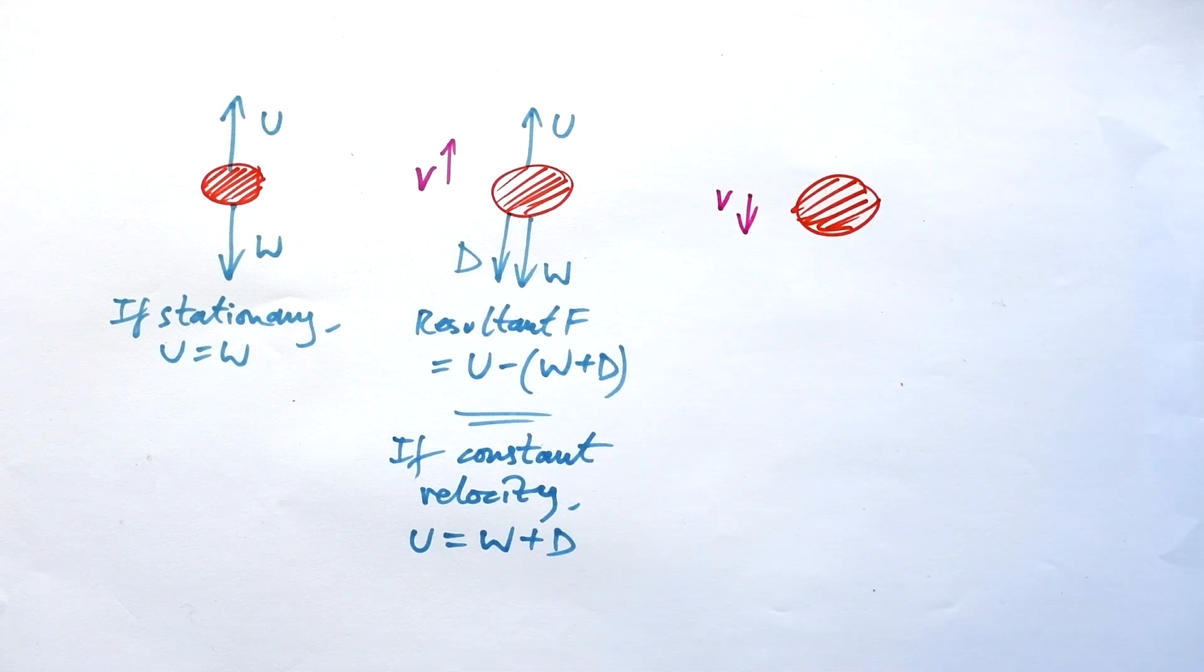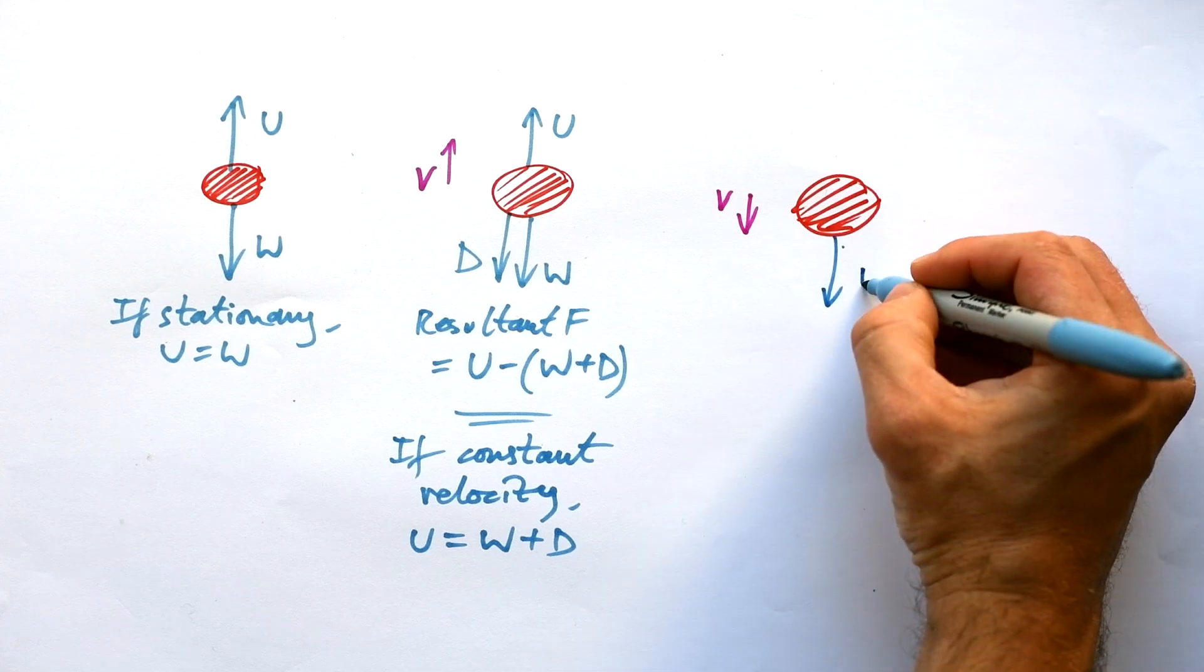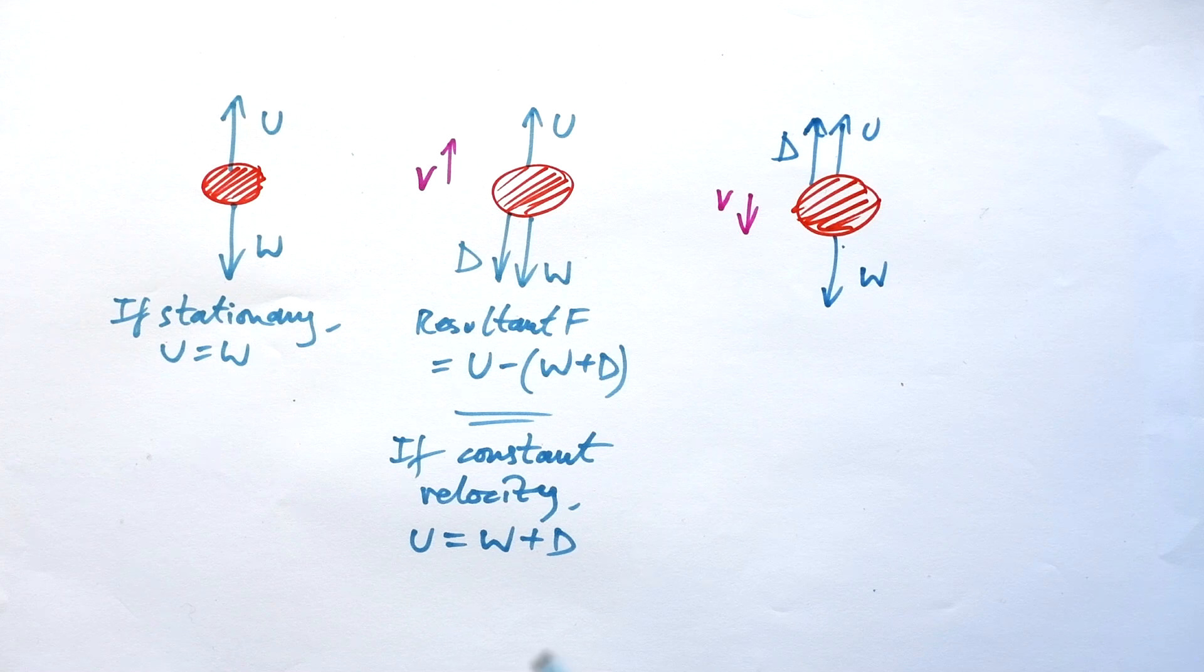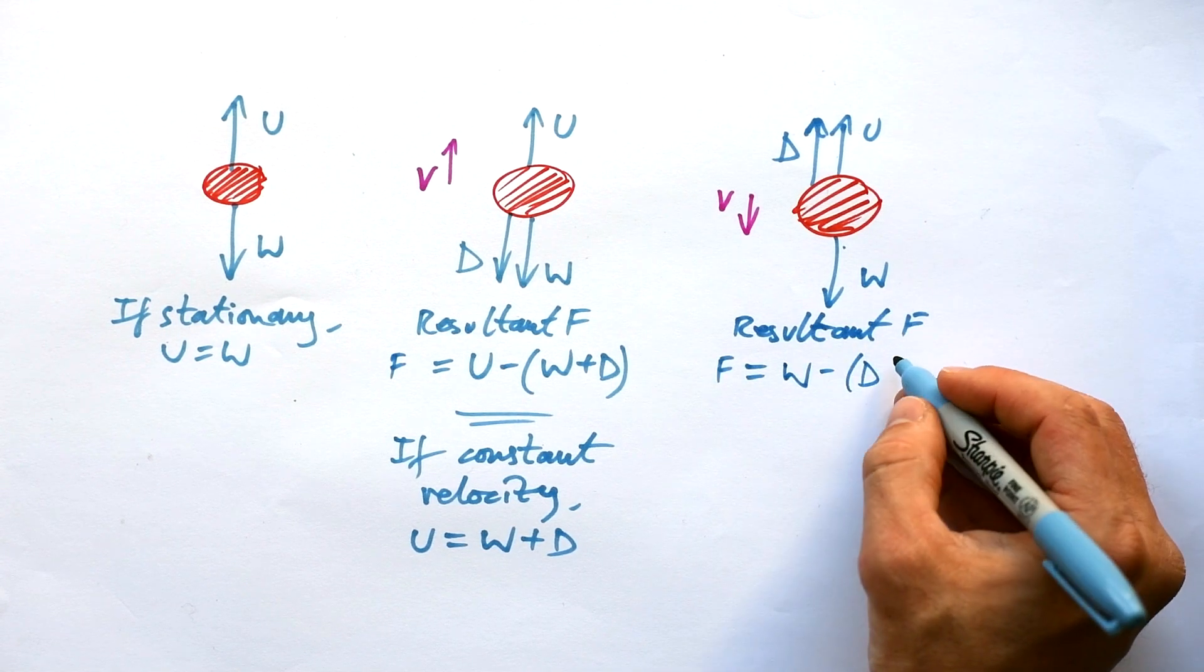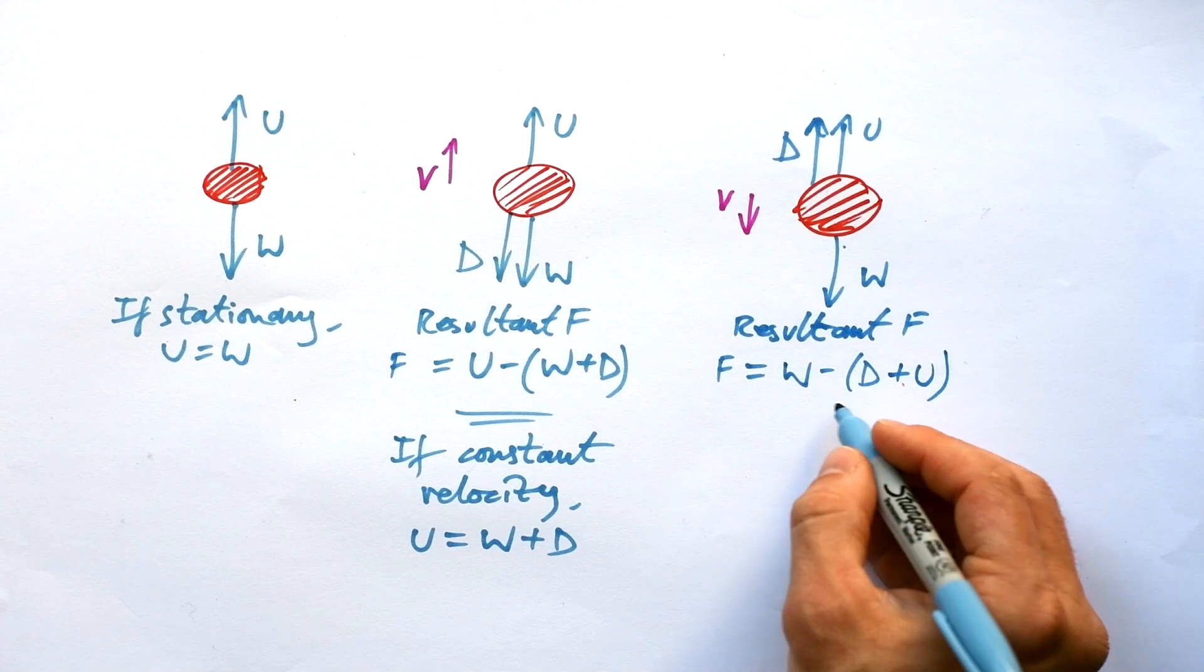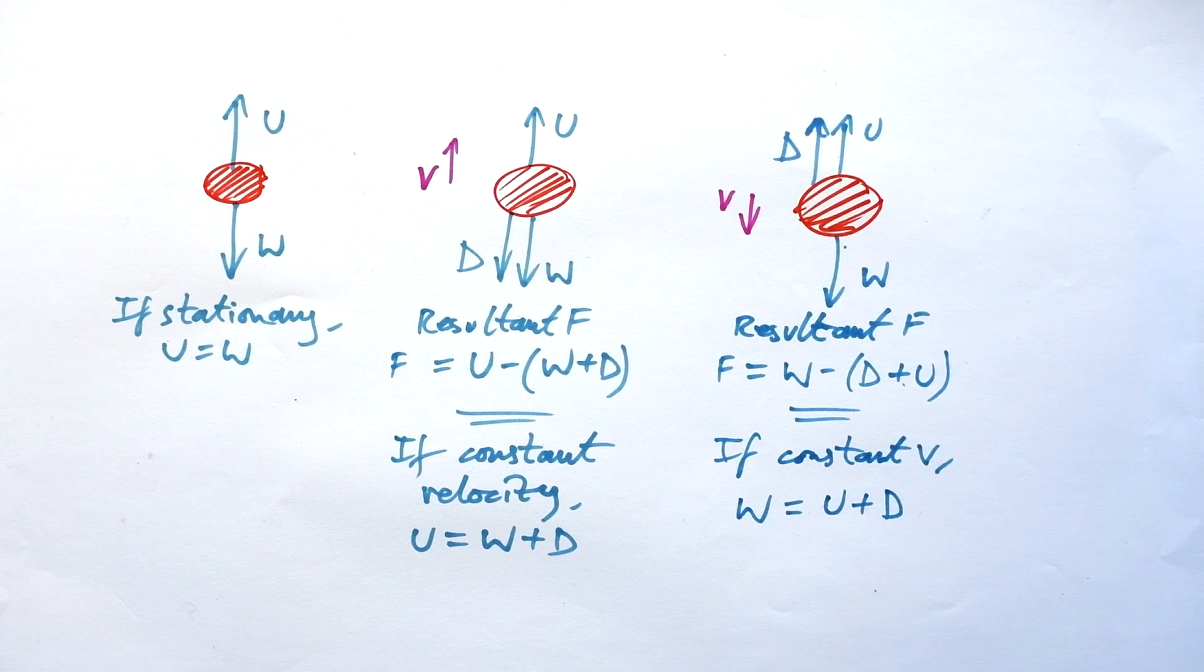But what if it's moving downwards instead? Then the opposite is true. Yes, we have the weight pulling downwards, upthrust pulling upwards, but now we have the drag pulling upwards as well. The resultant force is going to be equal to the weight take away both the upwards forces. And again, if at constant velocity, that means that the weight is equal to the upthrust plus the drag.